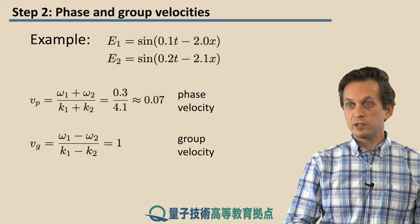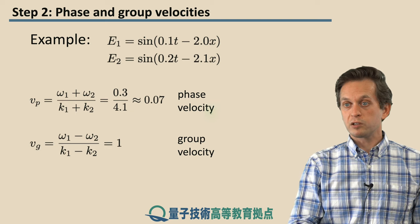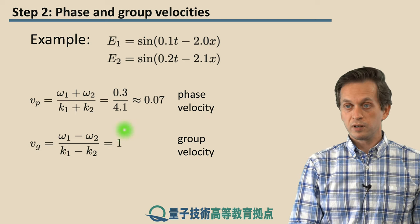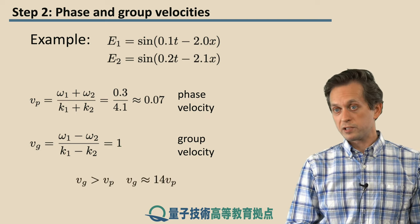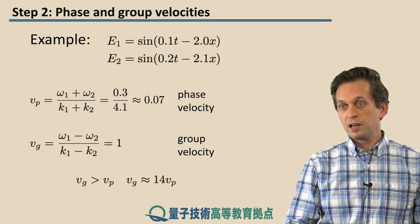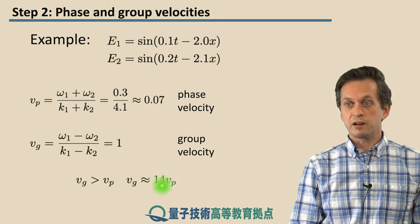For the group velocity, we do the same thing, and we obtain that the group velocity is equal to 1. So, we can see that the group velocity, in this case, is larger than the phase velocity. And in fact, it's about 14 times larger.